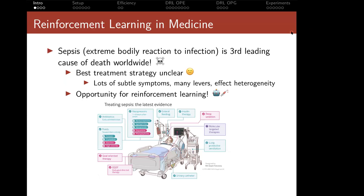To motivate my talk, I want to start by talking about the potential for reinforcement learning in medicine. Consider the case of sepsis, which is when the body has an extreme reaction to an infection. Sepsis is a leading cause of death worldwide, and despite this, it's not quite clear what's the best treatment plan to manage sepsis. There are many different interventions doctors can take — vasopressors, IV fluids — and there's potentially a lot of heterogeneity in how these affect different patients. Maybe this is a great opportunity for reinforcement learning.